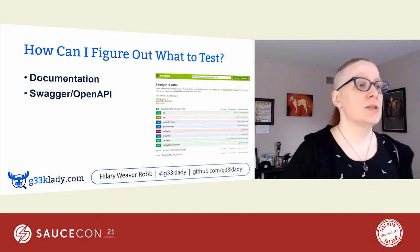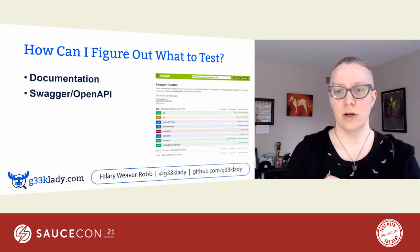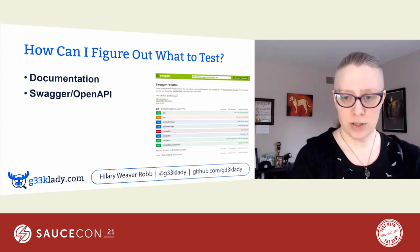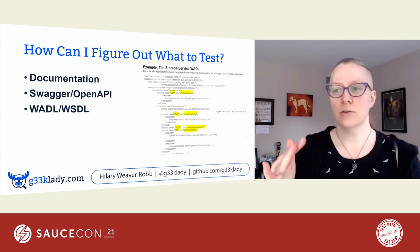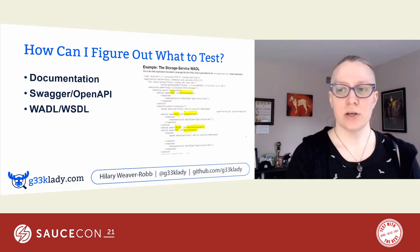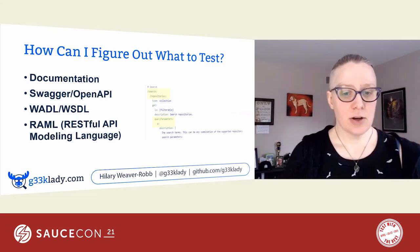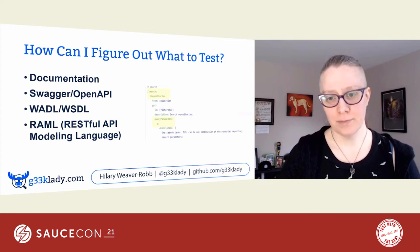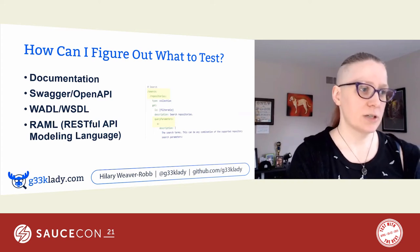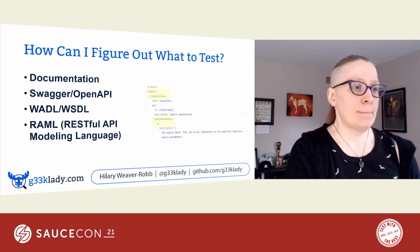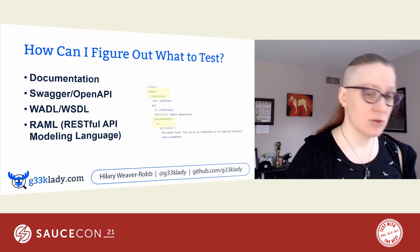So there's plain old documentation which someone took the time to write manually. Swagger or OpenAPI — this is automatically generated; you have some kind of library that generates this for you depending on how your API is defined. A WADL or WSDL, which is an XML definition, is generally automatically generated as well. And RAML — the same thing; it's a RESTful API Modeling Language in a YAML-type format, also automatically generated. We're going to be looking at the Swagger or OpenAPI for our API, so let's take a look at that right now.